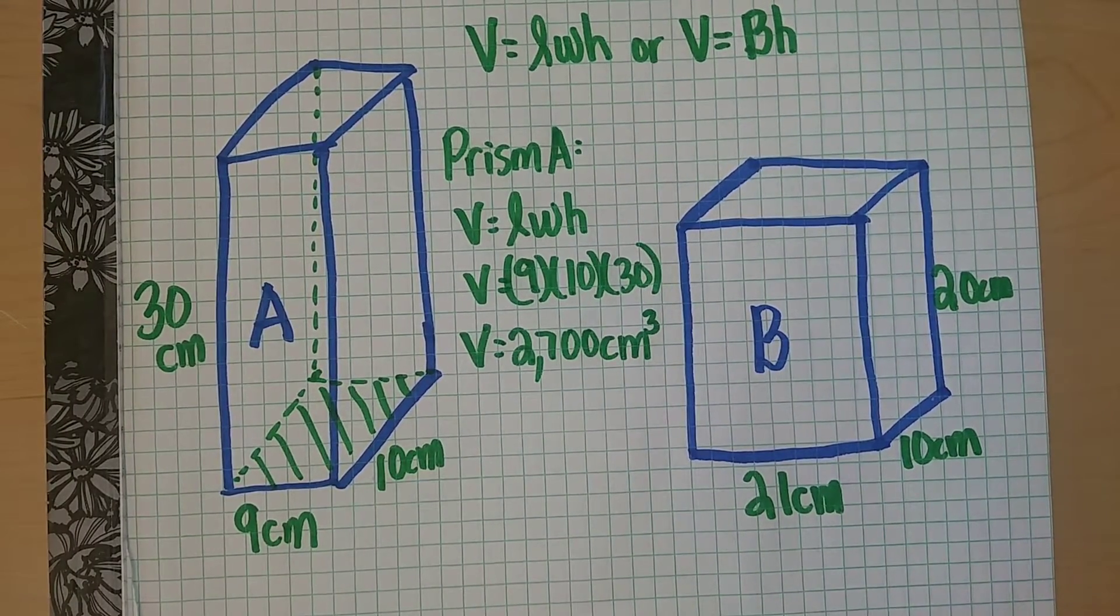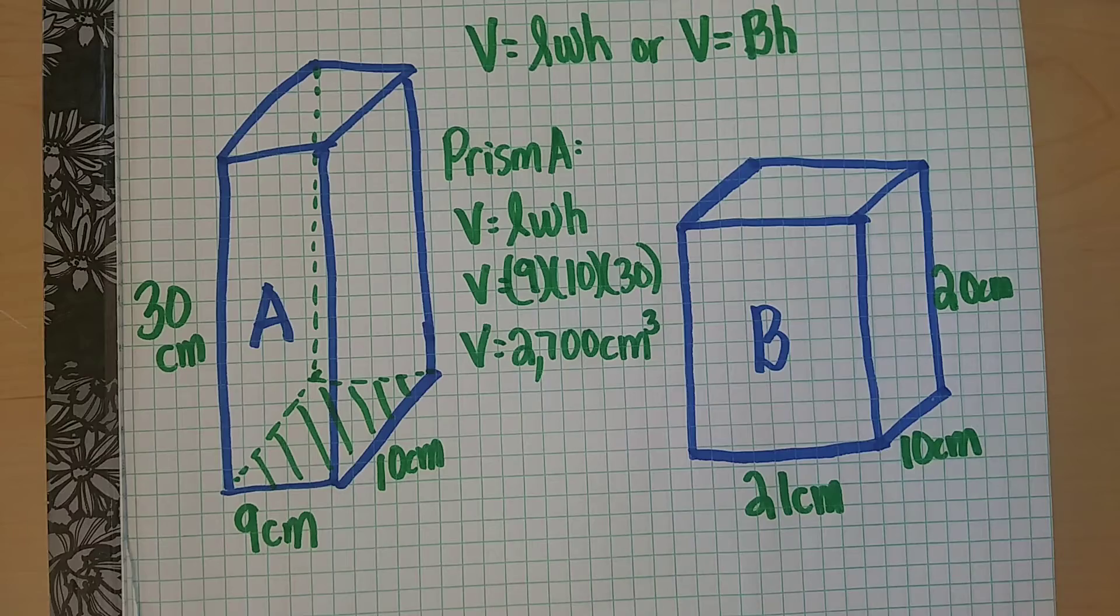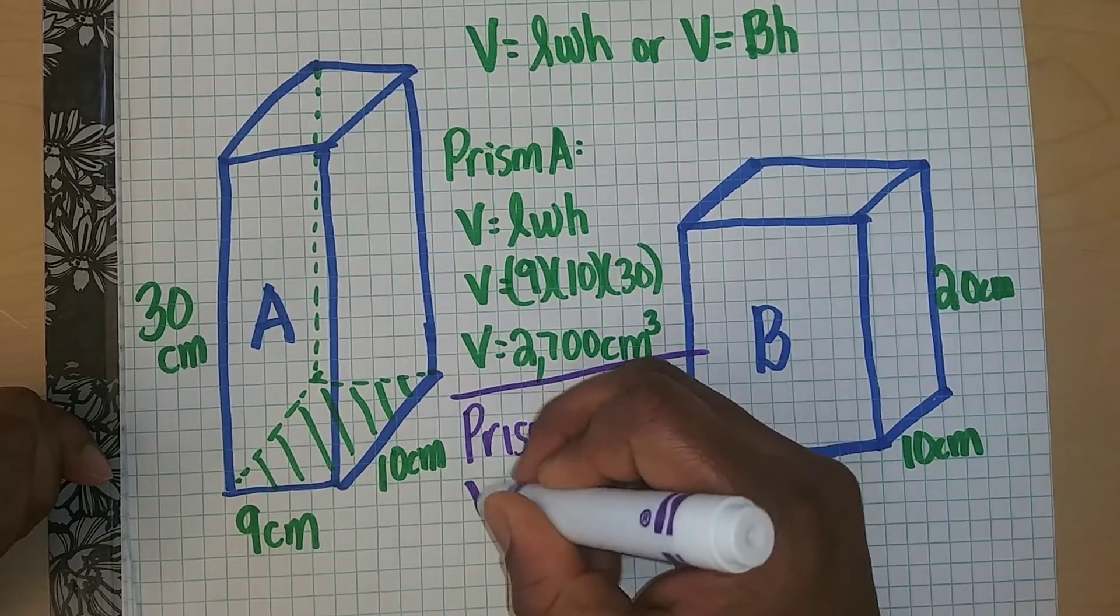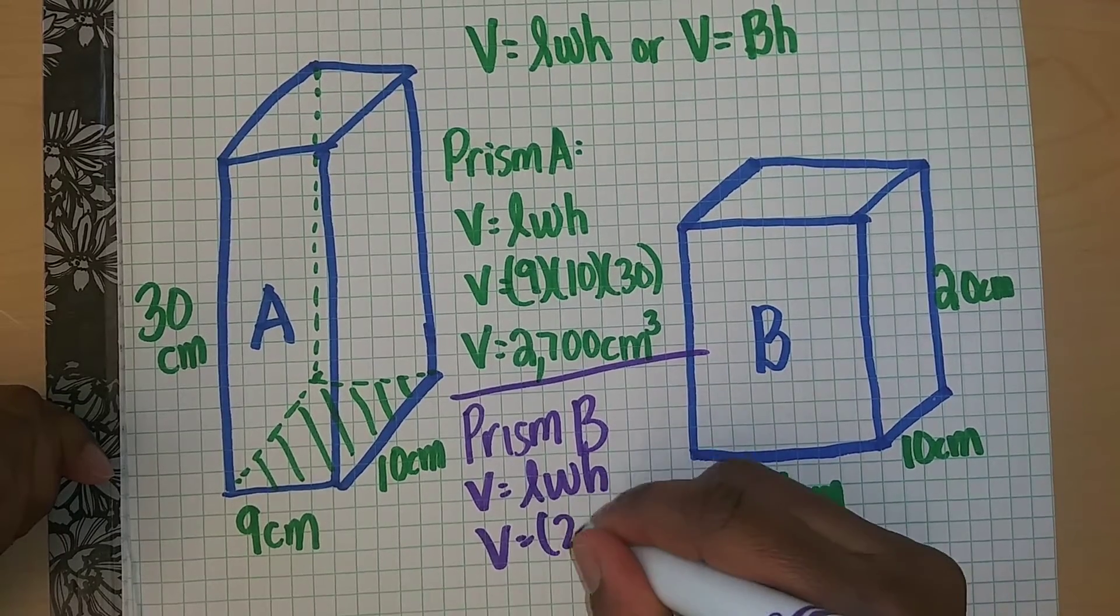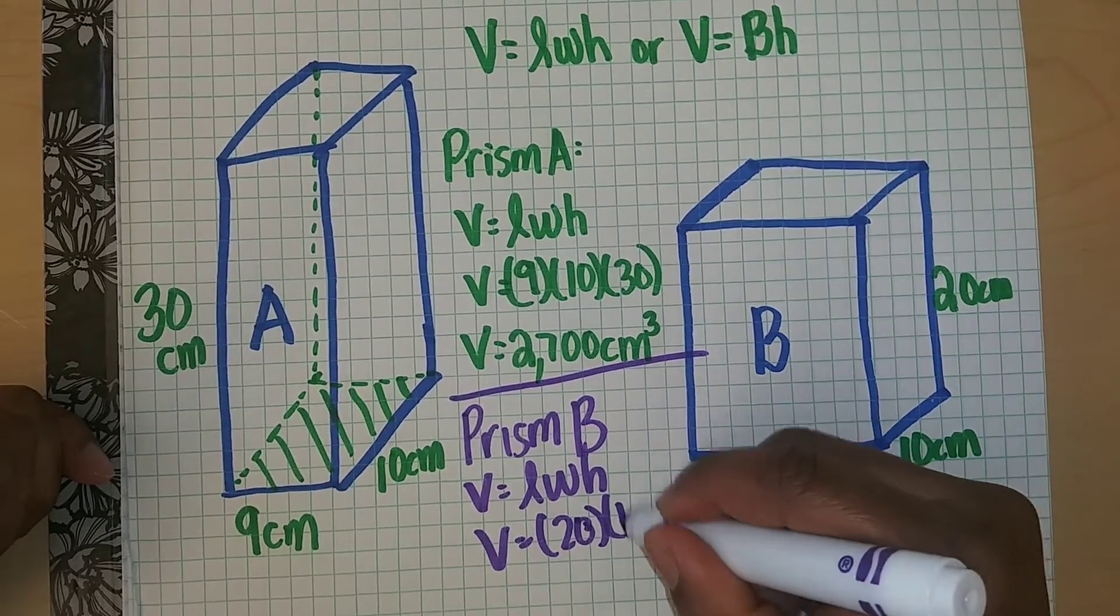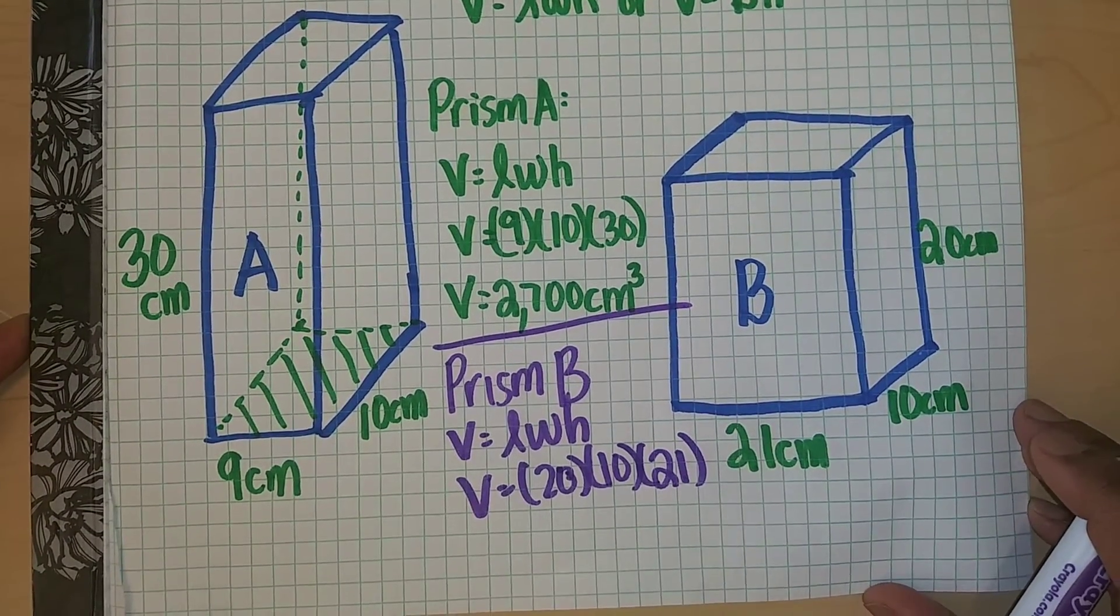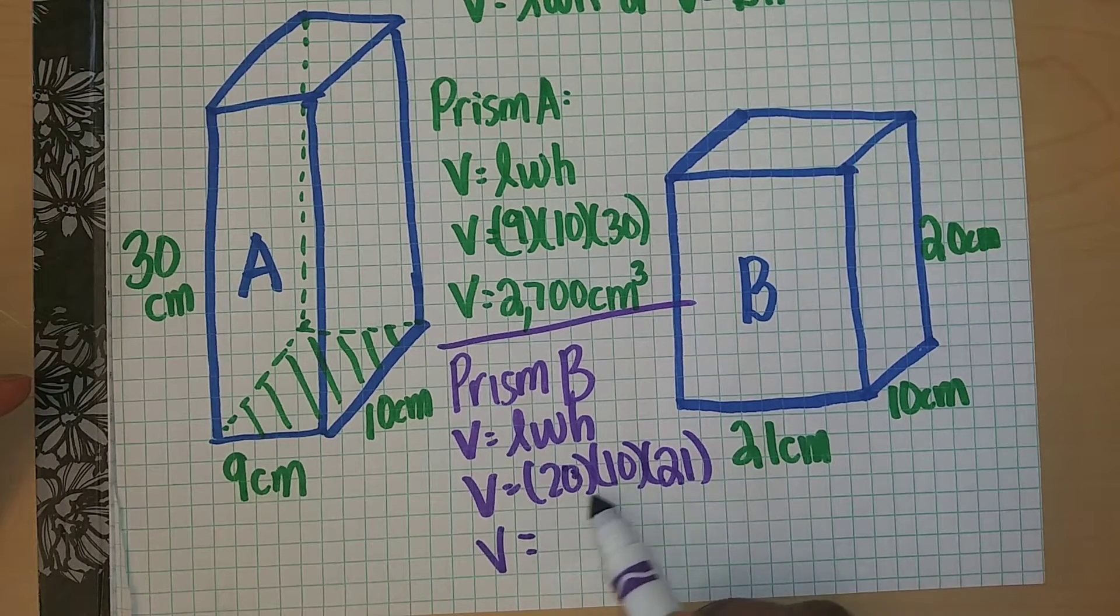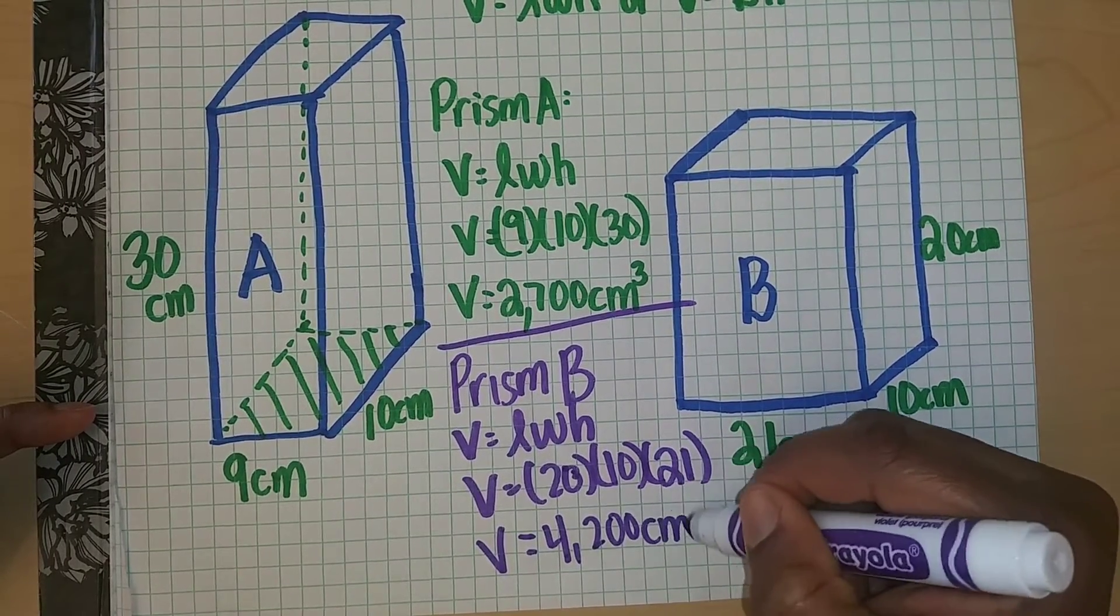Now let's do the same thing for prism B. Remember we are trying to find the volume of this composite figure. So prism B, I'll use the same formula. Volume is length times width times height. Volume is 20 centimeters, it was actually 21, so 20 centimeters times 10 centimeters times 21 centimeters. Volume is the same as 20 times 10 is 200 and 200 times 21 is 4200 cubic centimeters.